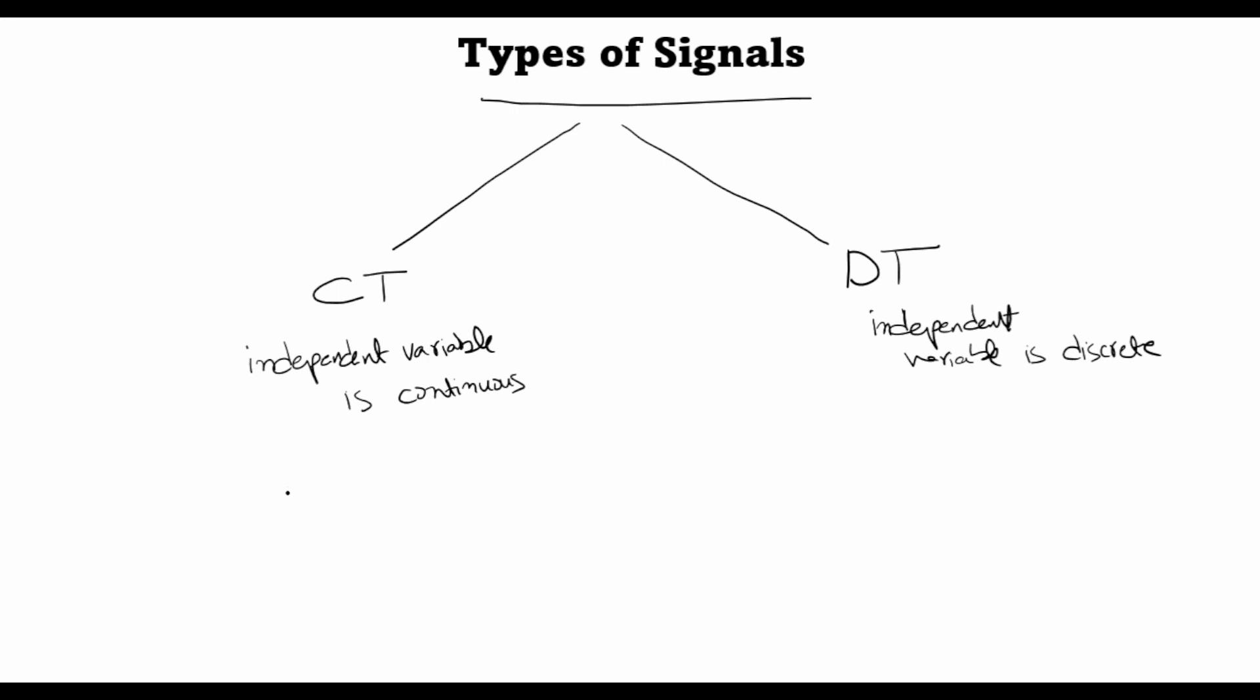For instance, if I have a signal like this, which goes down exponentially with time, and let's say this is the discharge of a capacitor in a circuit, then at any value that I take of the independent variable, which is time in this case, I get a corresponding value of the dependent variable. Continuous time signals are usually defined with round brackets.